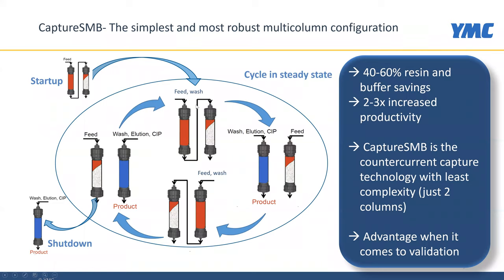After the columns have been sequentially loaded, the first column is washed and the columns are disconnected. The first column is then eluted, cleaned, and re-equilibrated, while the other column continues to be loaded. Then the columns take turns. The column that has been pre-loaded continues to be loaded, and the breakthrough is again captured on the downstream column. The fully loaded column is then washed, eluted, and cleaned. This is one cycle of the Capture SMB process.